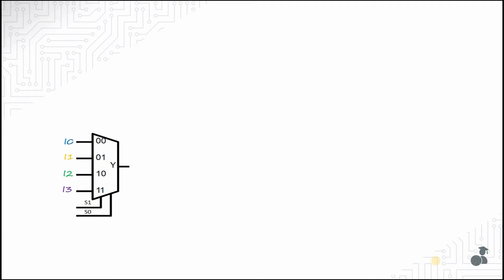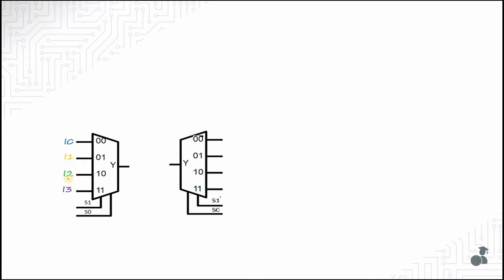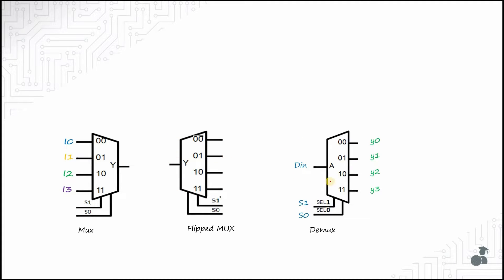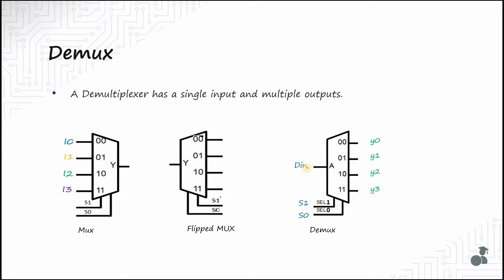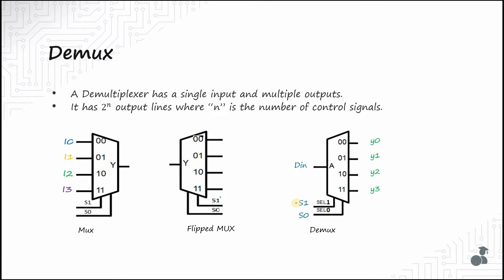In the previous video we learnt about the multiplexer. Now let's suppose we flip the multiplexer and make the input terminals I0, I1, I2, I3 as the outputs and the output terminal as the input, retaining the select lines. The resulting circuit is a demultiplexer with a single data input, many outputs, and select lines. A demultiplexer is a digital device capable of forwarding a single input onto any one of the output signals based on the select lines. It has 2^N output lines where N is the number of select lines, and one input signal DIN.